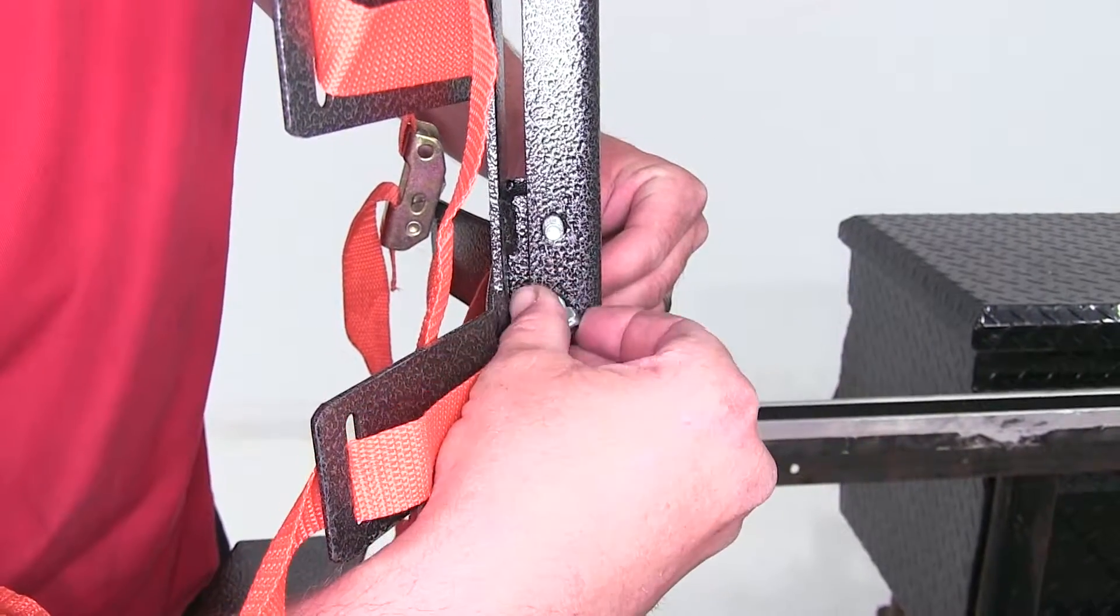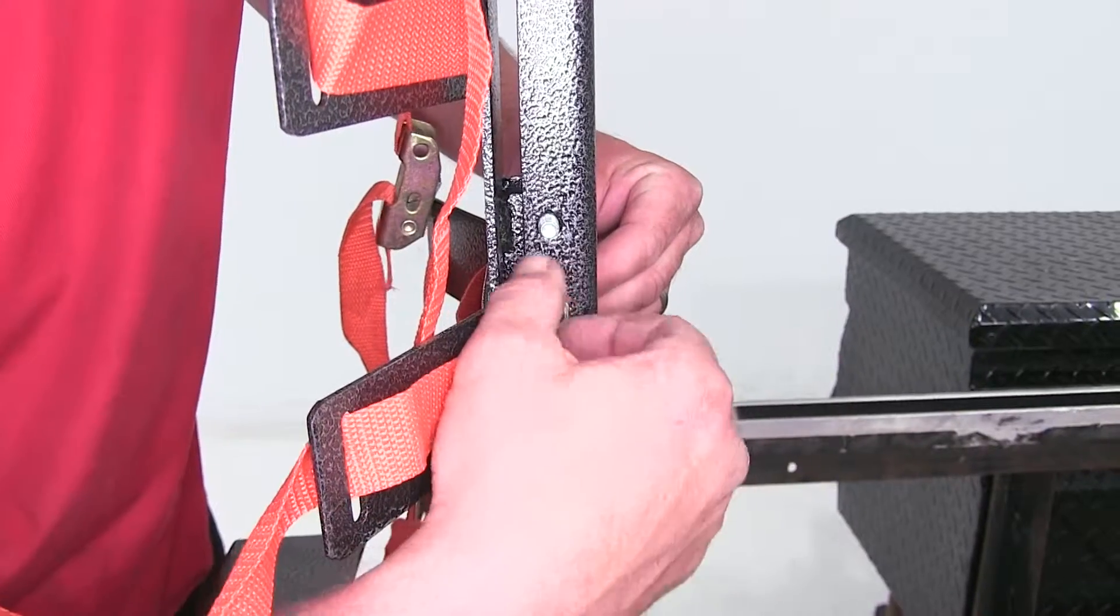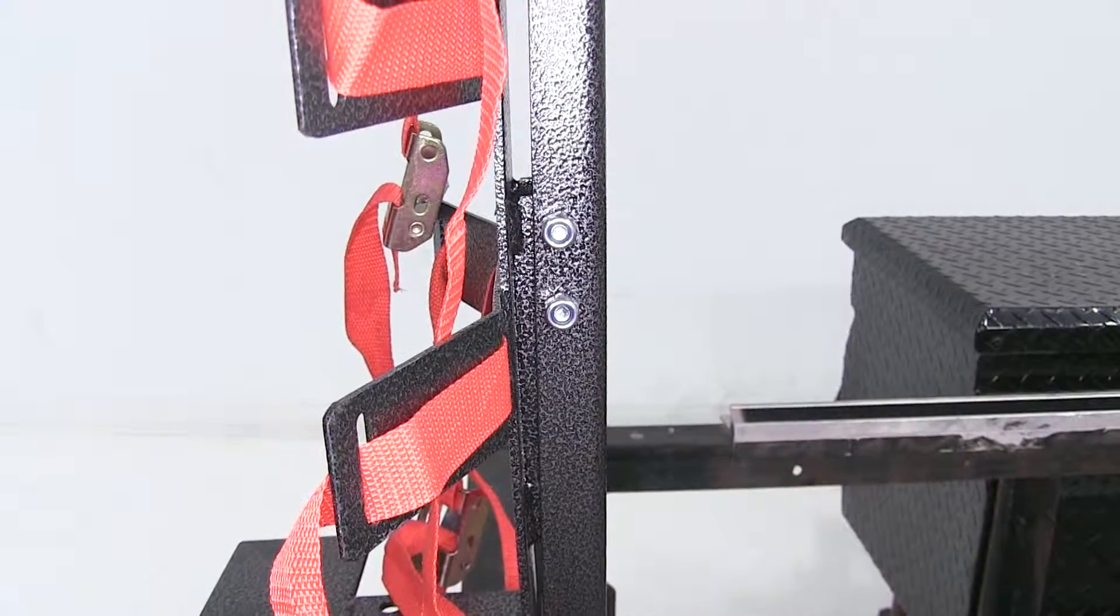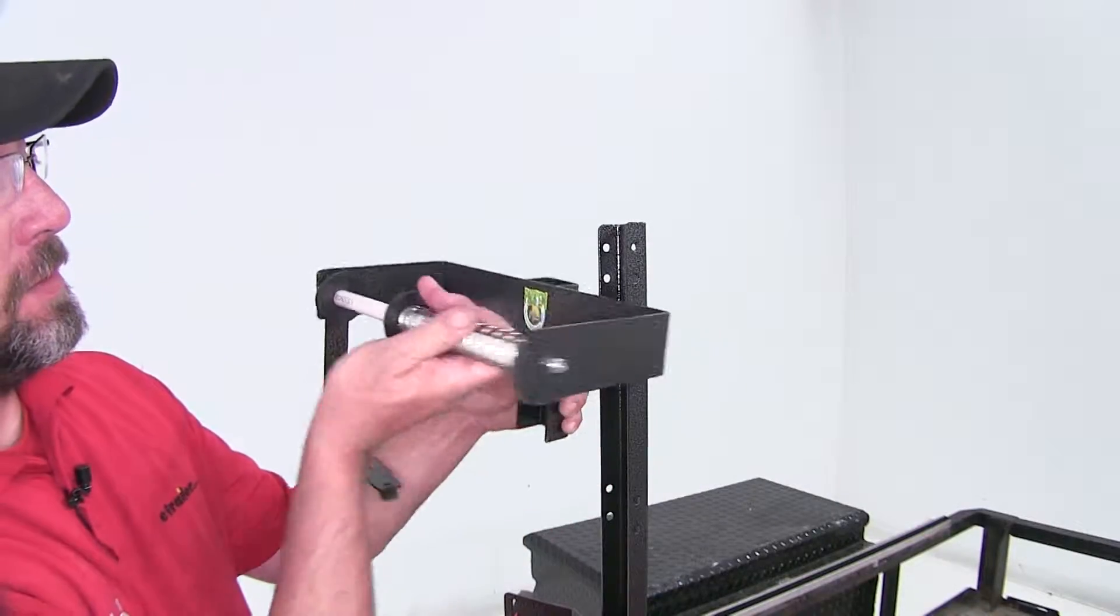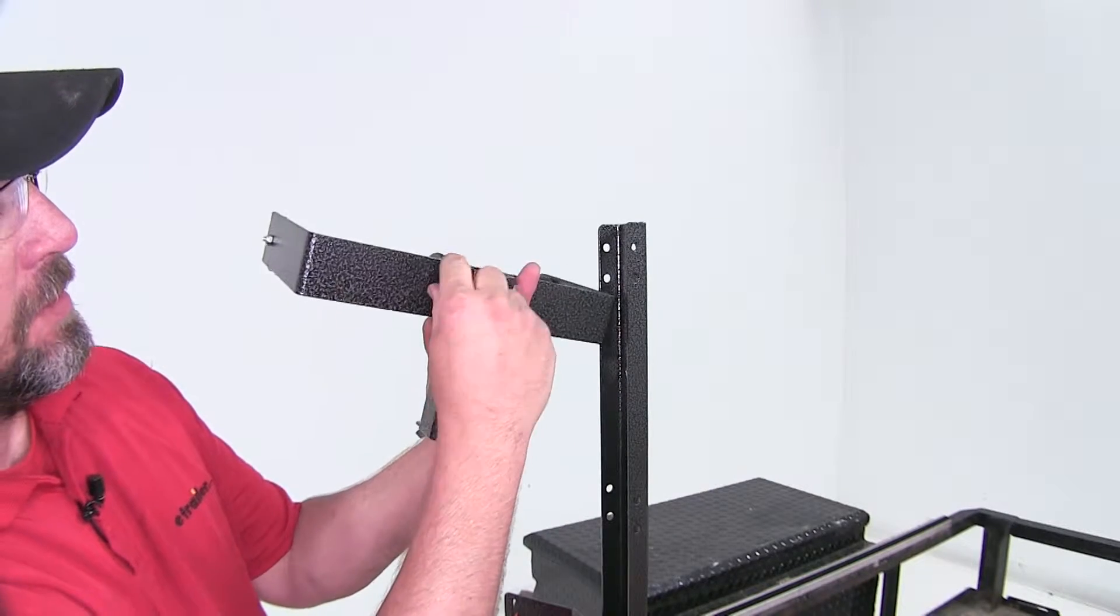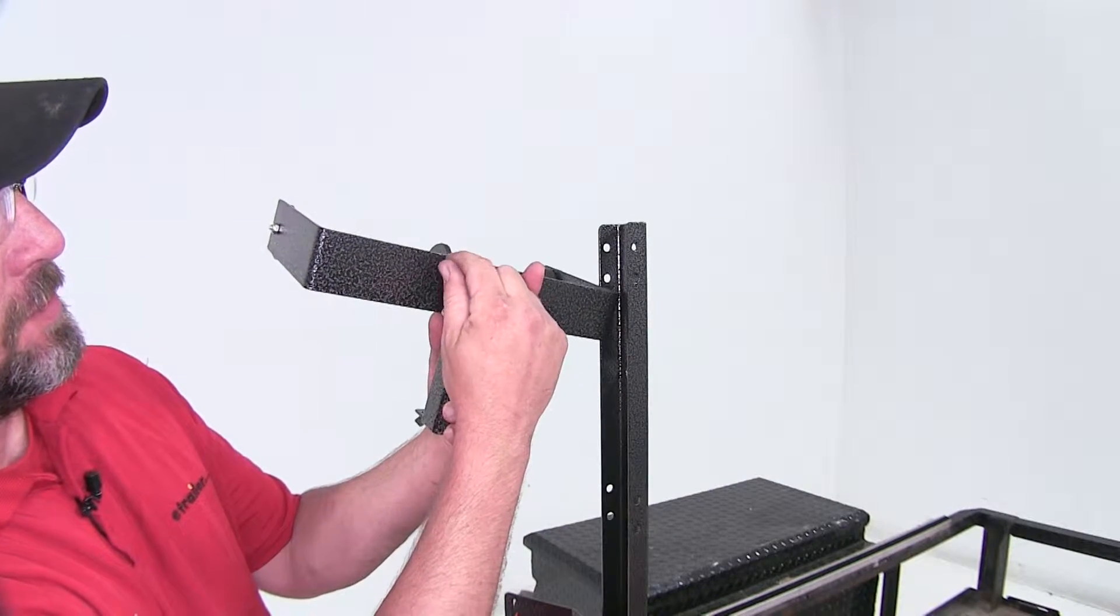Once I have both bolts in place, we'll just reinstall the nylon lock nuts. Next let's move to the trimmer string spool holder. Now our spool holder, we turn it around, also has two nuts and two bolts for securing the fasteners to the rails.